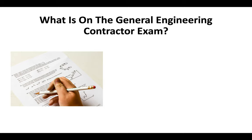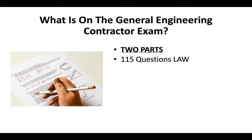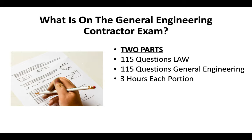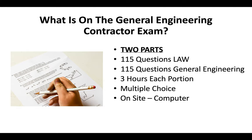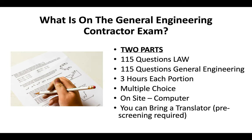The general engineering contractor license exam has two parts. There are 115 questions covering contractor license law and another 115 questions covering general engineering. You'll have three hours to complete each portion. It's a multiple choice exam done on site on computer. You can bring a translator if you need to; however, there is pre-screening before you're allowed to do that.